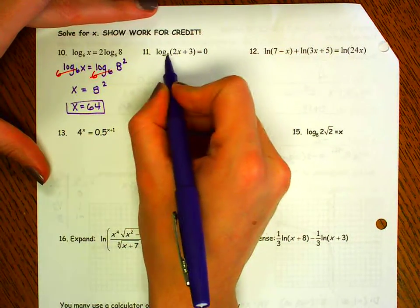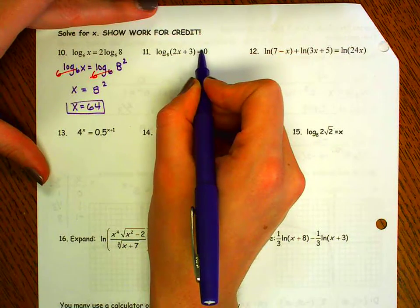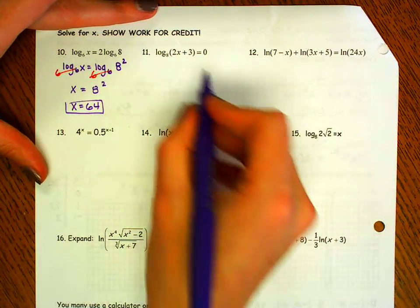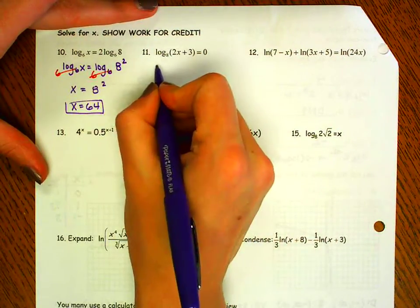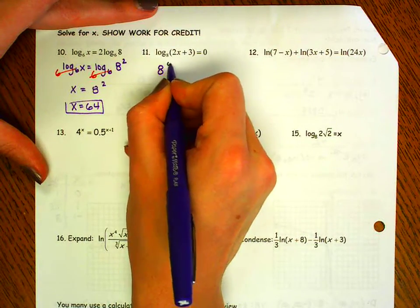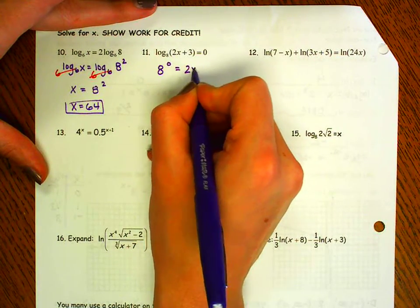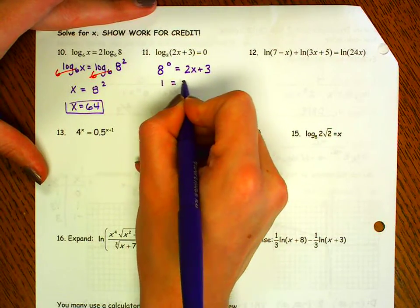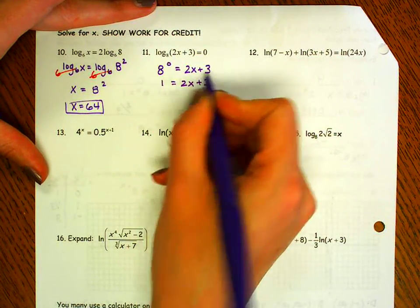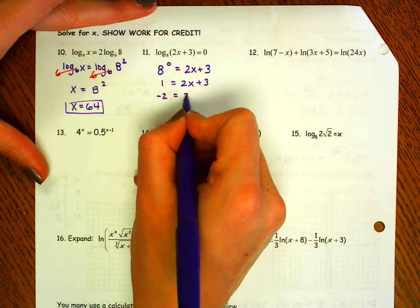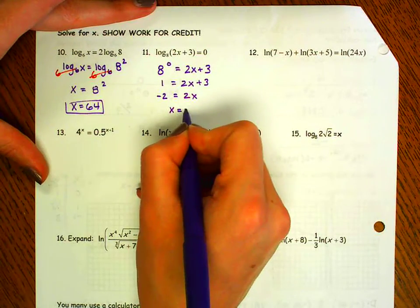I have log base 8 of something equals 0. I can always rewrite as an exponential, like as an exponent. So I'm going to rewrite this as 8 to the 0 equals 2x plus 3. Well, we know anything to the 0th power is 1. I'm going to subtract 3 and divide by 2.